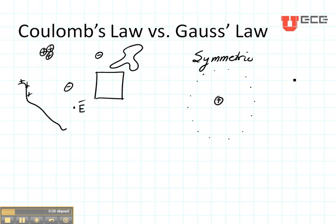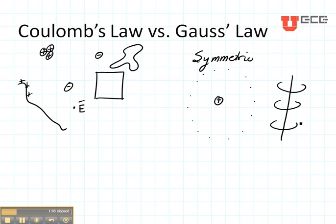Another thing we might be able to do is have a line of charge and find the electric field around it, particularly if that line of charge went all the way to infinity and minus infinity. So Gauss's law is much more limited — it requires a symmetric charge distribution.